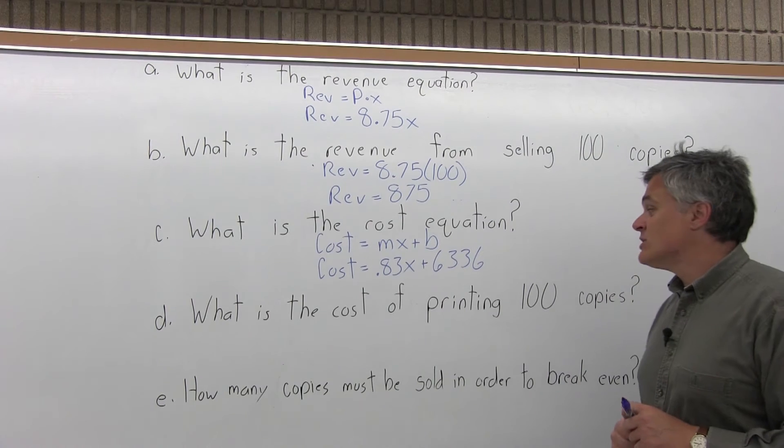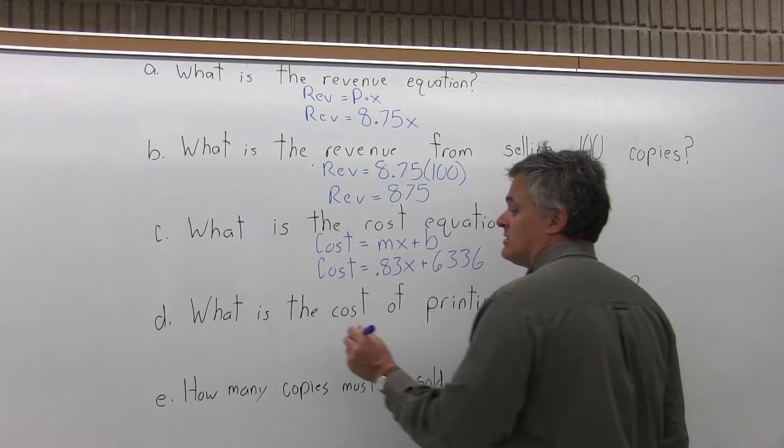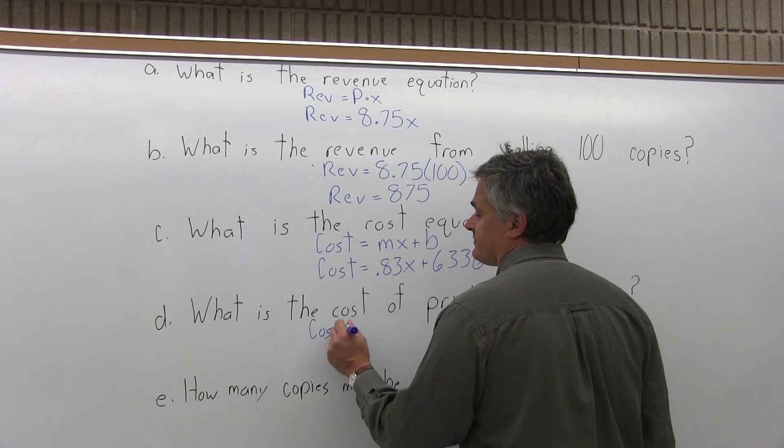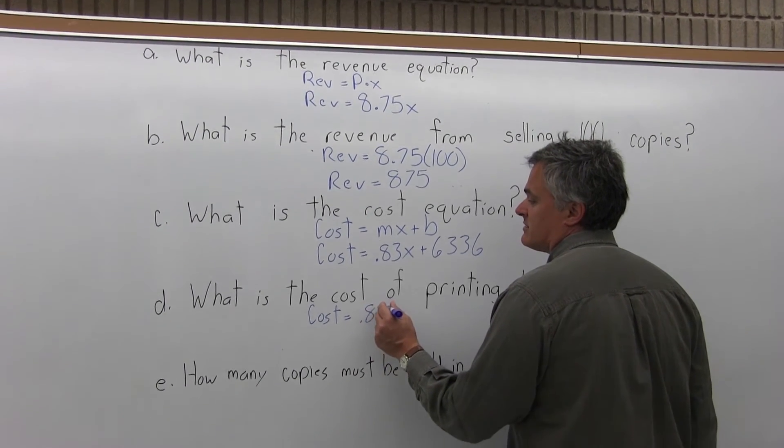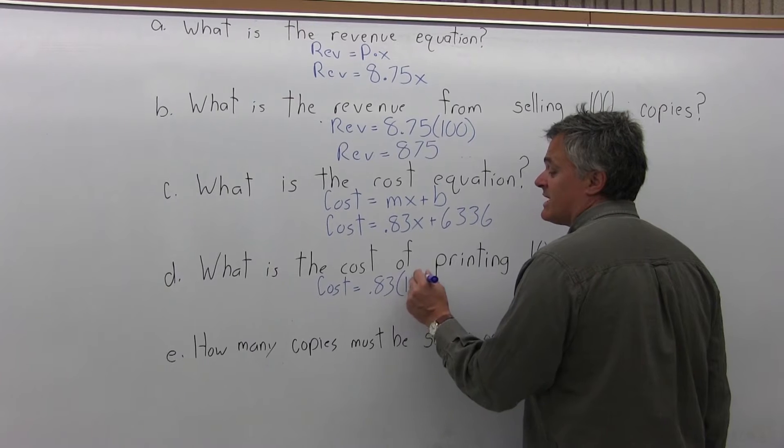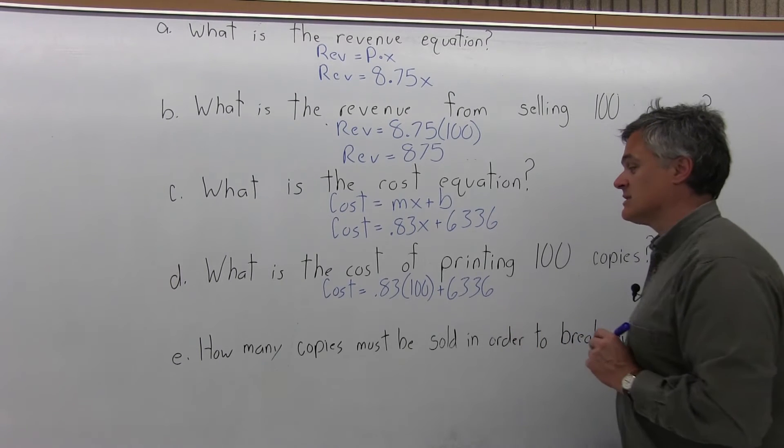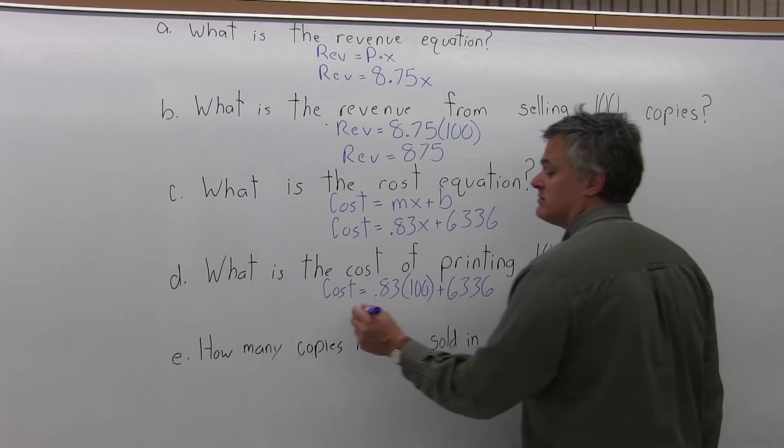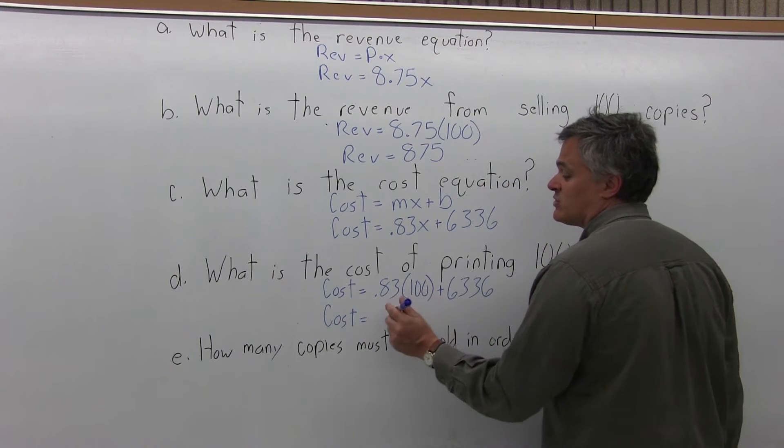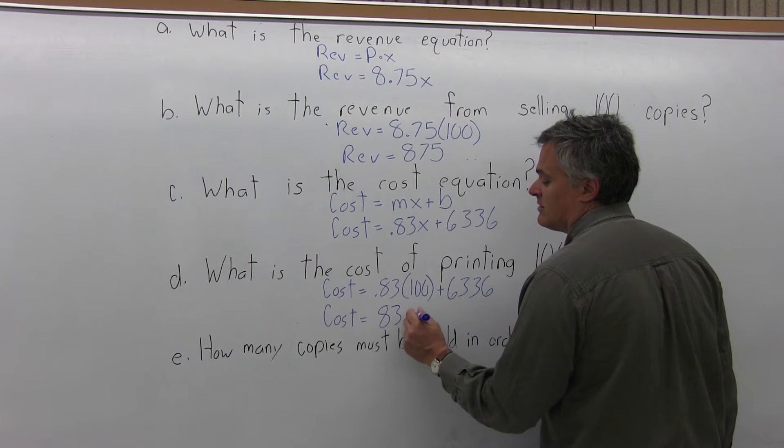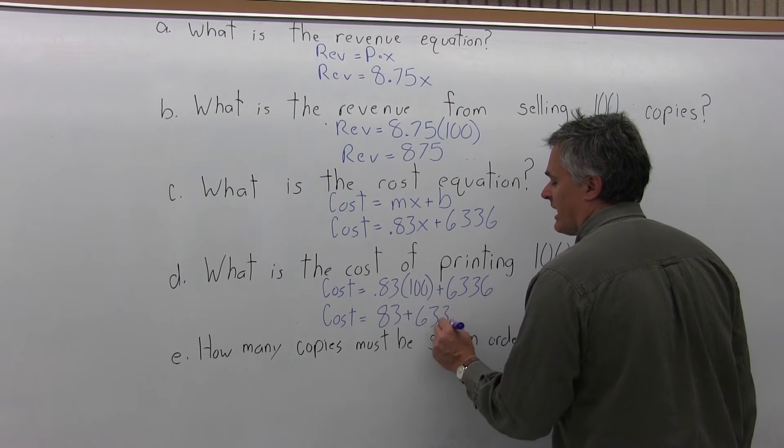Part D, what is the cost of printing 100 copies? Take the cost equation and put in 100 for the X. So .83 times X becomes .83 times 100 plus 6,336. Cost equals .83 times 100 which is 83, and I'm going to add that to 6,336.